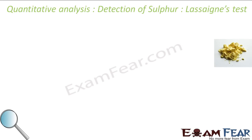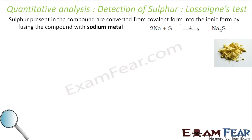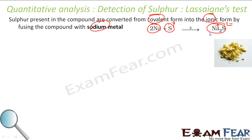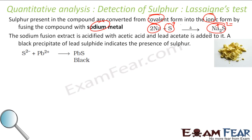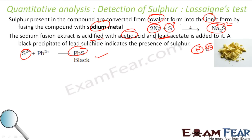Let us understand the detection of sulfur using the same Lassaigne's test. The sulfur present in covalent form is converted to ionic form by fusing with sodium metal — covalent sulfur becomes Na₂S, which is ionic. From the sodium fusion extract, we acidify with acetic acid and add lead acetate. If a black precipitate of PbS forms, it confirms the presence of sulfur.